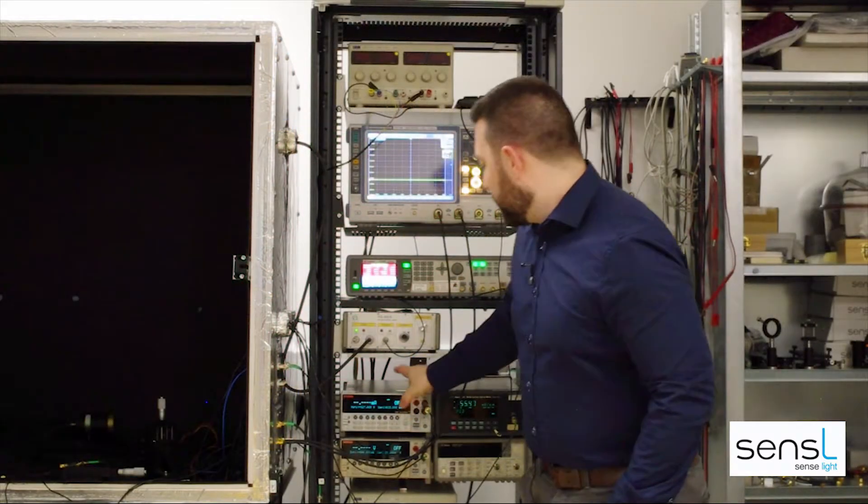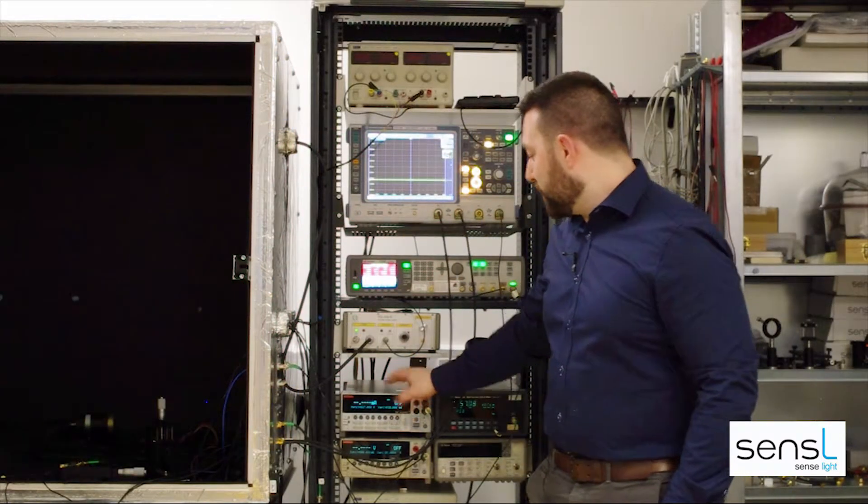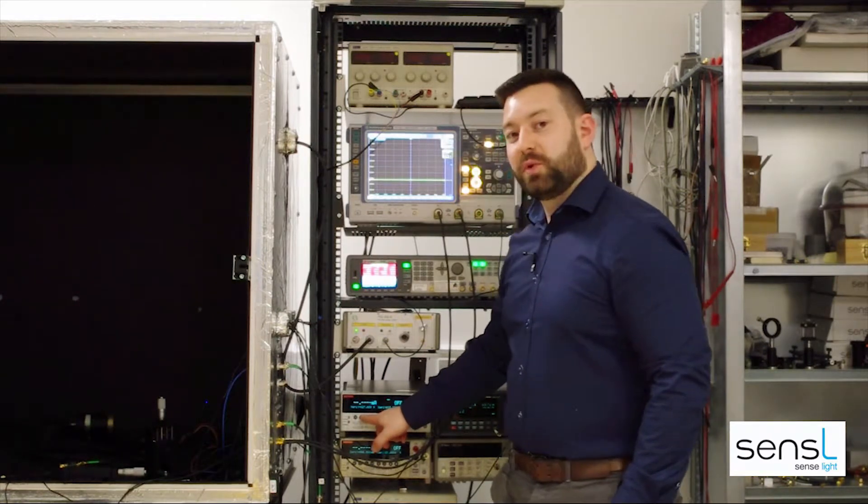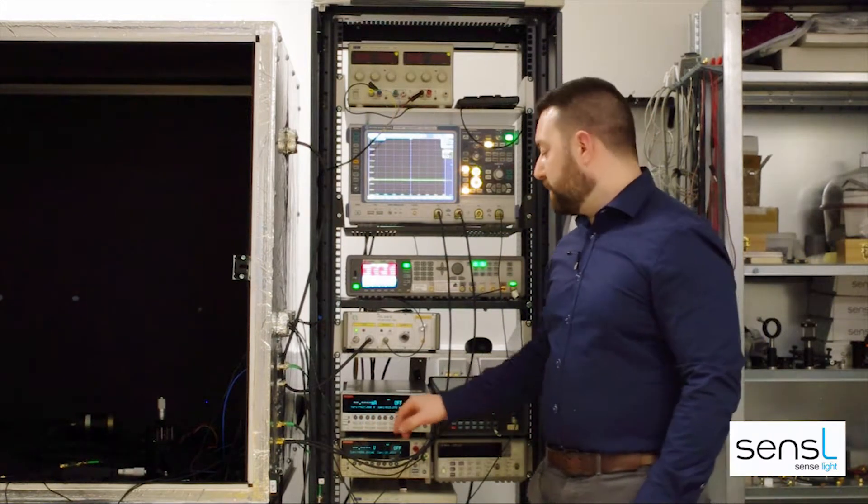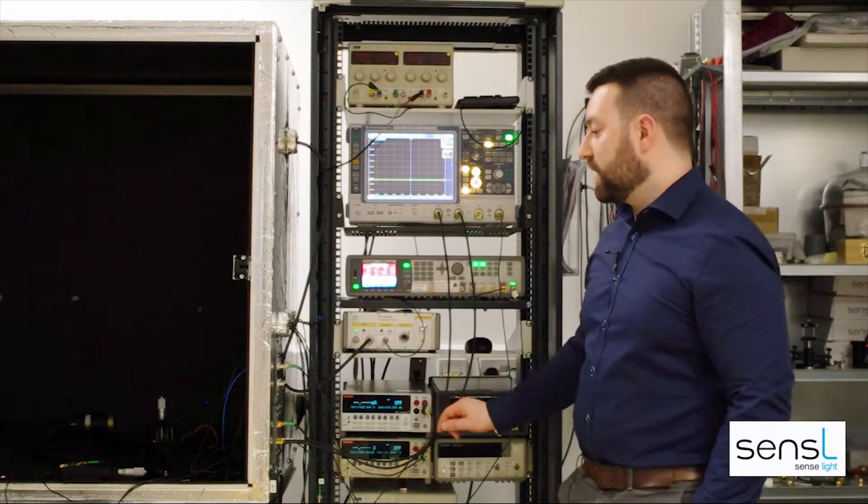Power is supplied using the Keithley source meter. I've set the voltage to 27 volts and I've limited the current to 15 milliamps as per the datasheet specification.